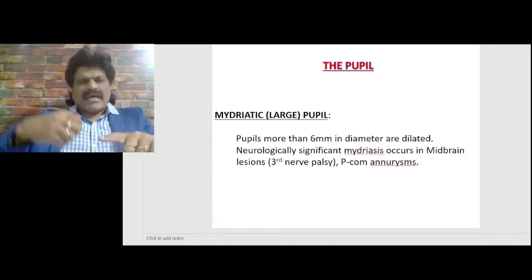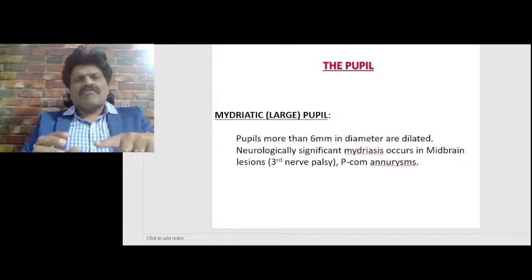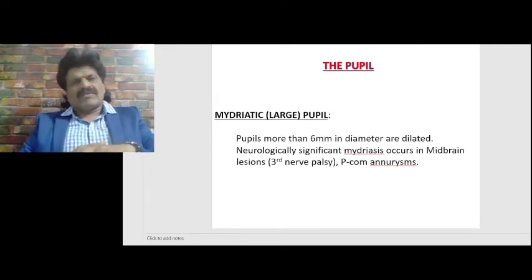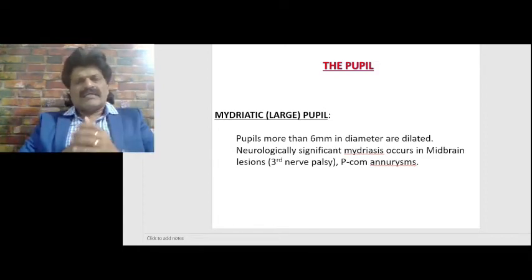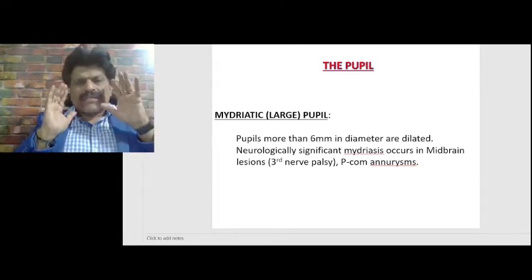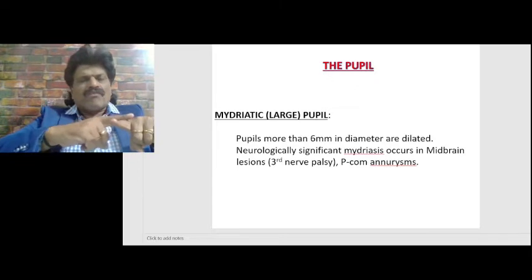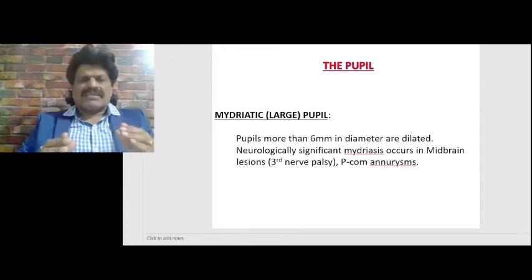Here is an important concept. Extrinsic compression of the third nerve, like posterior communicating artery aneurysms or uncal herniation, will affect the superficially placed parasympathetic fibres first. Therefore, pupillary dilatation is the earliest sign in a compressive pathology of the third nerve. Whereas if it is an intrinsic pathology of the third nerve — where the center of the nerve gets affected, as in diabetes — it causes all the clinical manifestations of third nerve palsy, like drooping of the eyelid, divergent squint, and double vision. But the pupils are usually not affected because the pupillary fibres are superficially placed and are spared in intrinsic lesions.